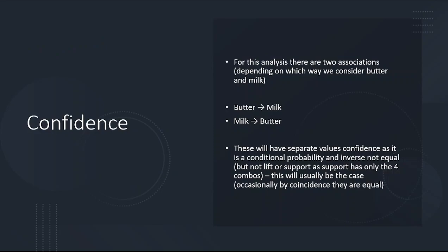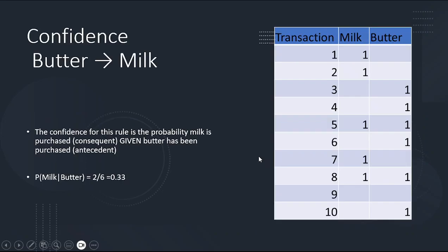Confidence can be looked at in two ways. Conditional probability is not commutative, so order does matter — you may get different values. The probability of milk given butter: butter appears in 6 transactions, and of those, 2 also buy milk, so that's 2 out of 6, or 0.33. That's what we call confidence — the probability that they buy milk given that they bought butter.